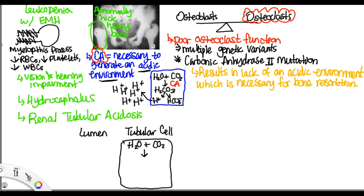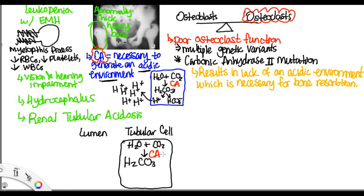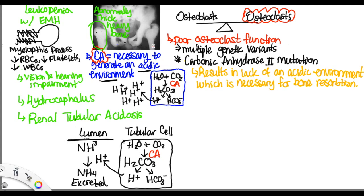Tubular cells normally use carbonic anhydrase to combine water and CO2 to make H2CO3, which then breaks into H+ and HCO3-. The hydrogen ion transfers into the lumen and joins with NH3 to form NH4, which can be excreted, getting rid of acid. This results in a net gain of bicarbonate going into the blood, maintaining blood pH as a buffer. Without carbonic anhydrase, the cell can't generate this acid, can't excrete it, and can't get the net gain of bicarbonate — so these individuals become acidotic.